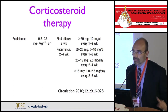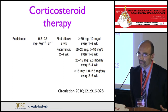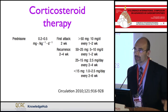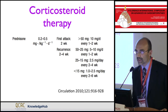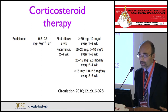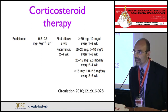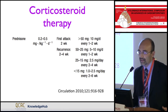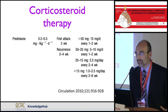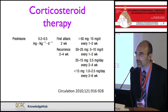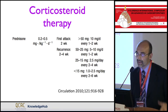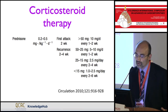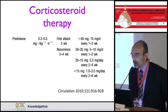Corticosteroids are quite effective in pericarditis, but their use may be associated with more recurrences and may favor chronicization. One possible explanation is that corticosteroid therapy may impair viral clearance. Another is that high doses are often used — the guidelines recommend 1 mg/kg/day of prednisone — whereas rheumatologists typically use lower doses for serositis in systemic inflammatory disease. Very quick tapering further contributes to recurrences.